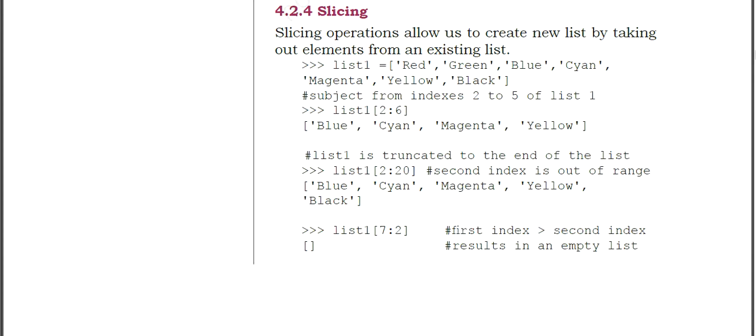Welcome dear students to another class of Informatic Practices. Today we are going to talk about slicing, which is one of the operations on a list. Slicing is an operation that allows us to create a new list by taking out elements from an existing list — we are just taking a slice from a piece.